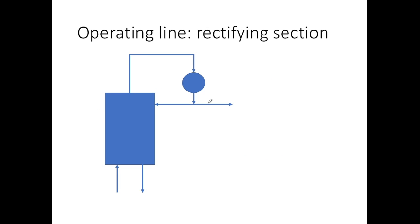Let's derive the mass balance of the rectifying section of the distillation column — this mass balance equation will be called the rectifying section operating line. The top part of the distillation column has a reflux section that diverts some of the product back into the column to increase the overall concentration of the top product. We only need to perform the mass balance for the entire top section — the rectifying section.